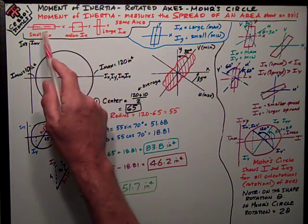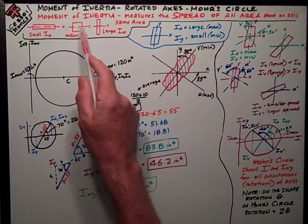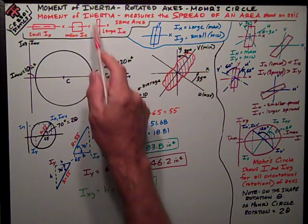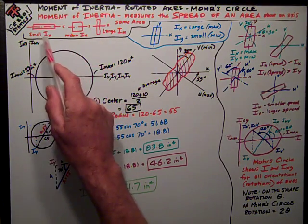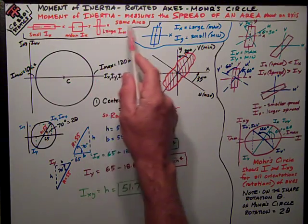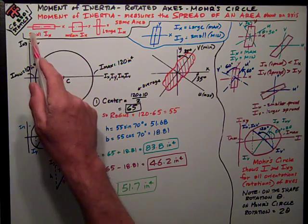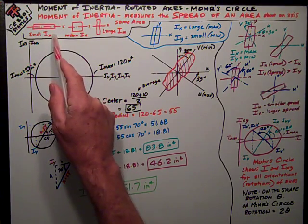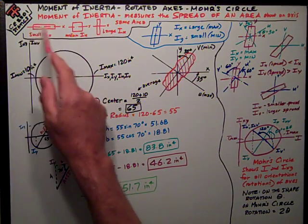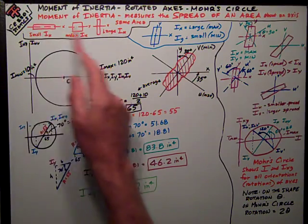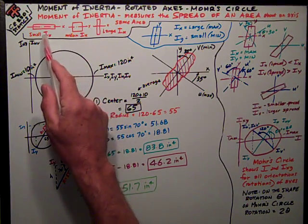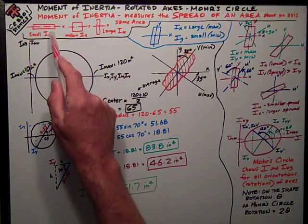This rectangle on its side, a square, and a rectangle vertically. All of them could have the same area, but this one would have the smallest spread of the area about this x-axis going horizontal. So it would have a small ix.